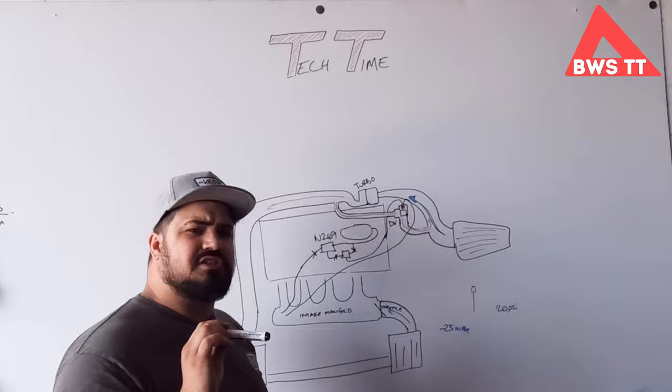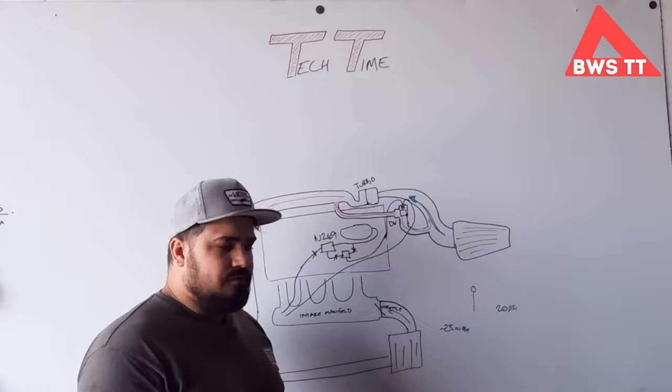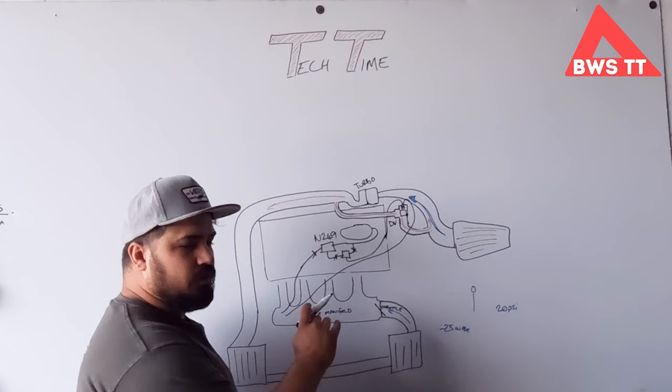So why did Audi spend so much money developing a system when cars for years before, I think of RS Cosworths and things like that, didn't need extra valves to control the dump or the diverter valve. Well, there is one additional purpose of the N249 that we have not discussed.